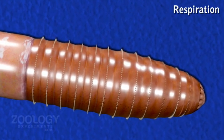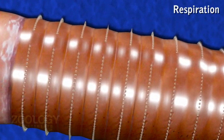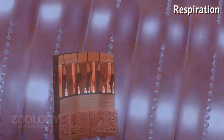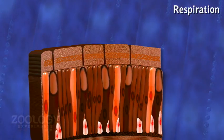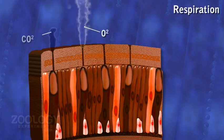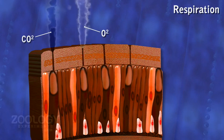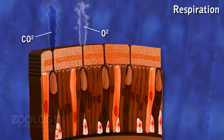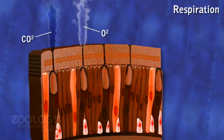In Pheretima, the body surface acts as a respiratory surface. Exchange of gases like oxygen and carbon dioxide takes place between blood capillaries of the outer epidermis and the surface film of moisture, contributed by secreted mucus, excreted waste, and coelomic fluid.